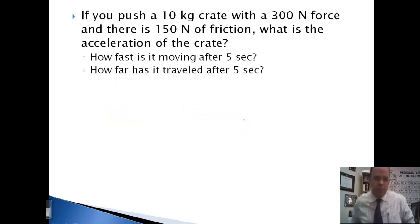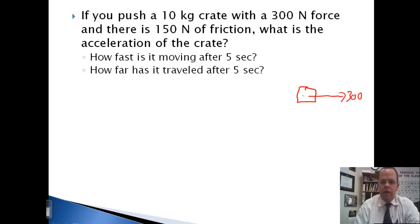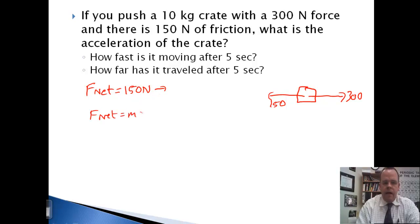One final problem. You push a 10 kilogram crate with a 300 newton force and there's 150 newtons of friction. What is the acceleration of the crate? And then a couple of other questions after that. So let's look at this crate. We have 300 newtons going one way. Friction will always go the opposite way. So in this case, the net force is going to be 150 newtons to the right. So F net equals MA, 150 equals 10A. A will be 15 meters per second squared.